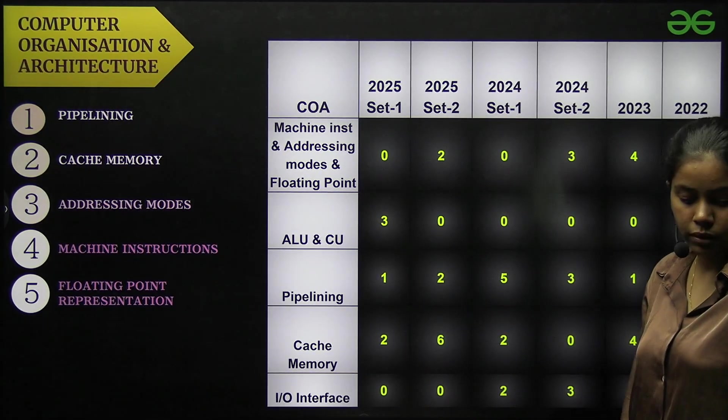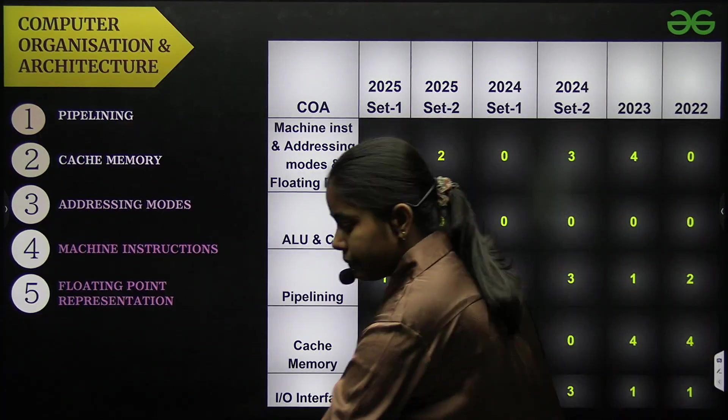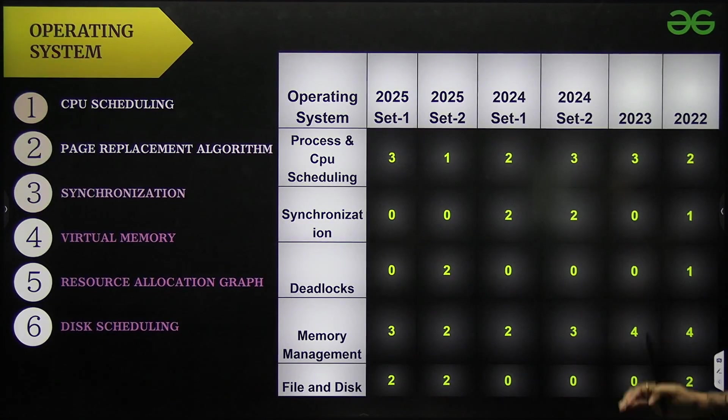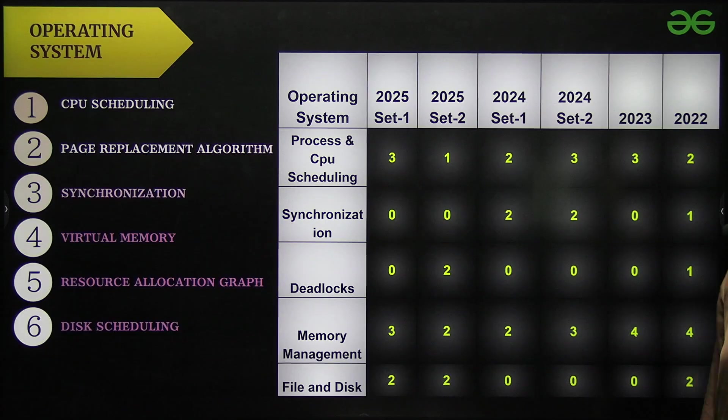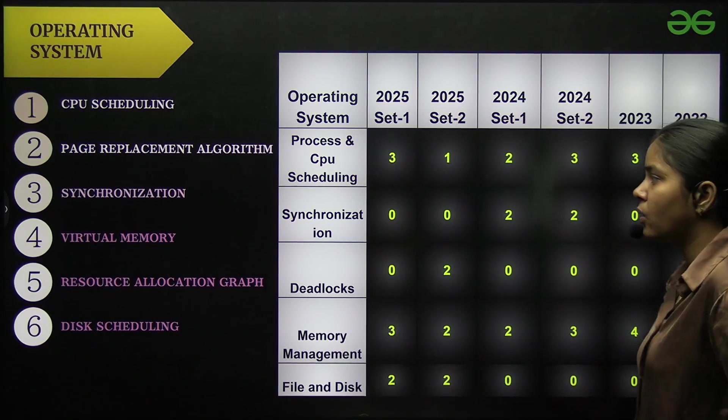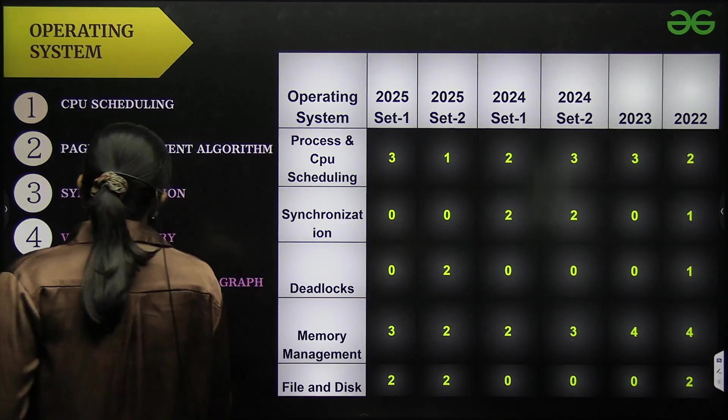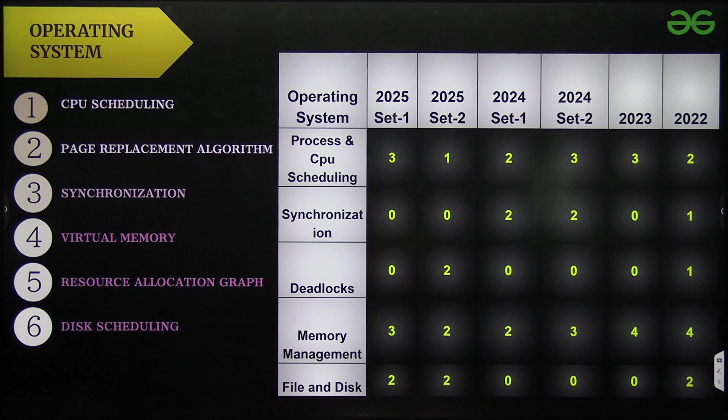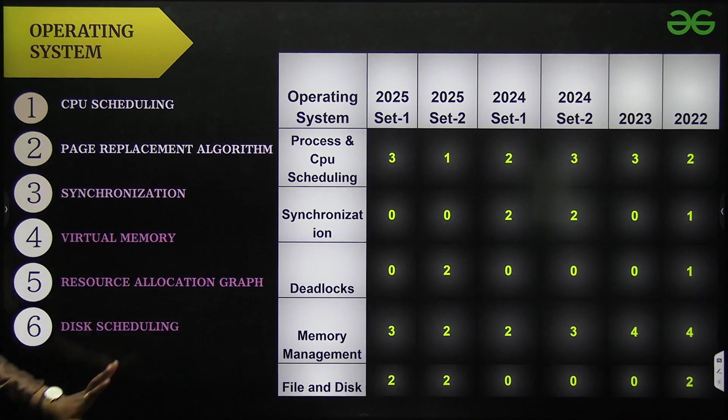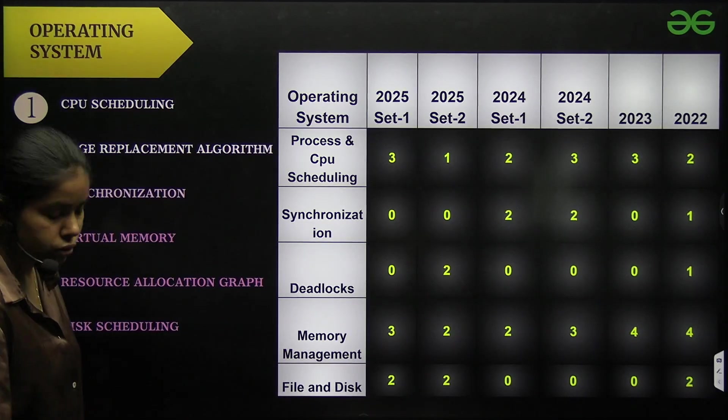Next we have operating system. Operating system important topics are CPU scheduling, page replacement algorithm, synchronization, virtual memory, resource allocation, disk scheduling. These topics are important and you can see the weightage is also given.